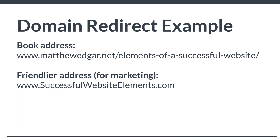I wrote a book and there's a page on my website that talks all about it. But when I do interviews about the book, I don't want to give people 'matthewedgar.net/elements-of-a-successful-website' because that's a mouthful to say and quite a lot to put on an ad. So instead we can use a friendlier address such as successfulwebsiteelements.com, which redirects to that page. When people type in successfulwebsiteelements.com, I want to know about it — I don't want those people to just be labeled as direct traffic. I want to know they came as a result of typing in this friendly URL, so I better understand if my marketing to promote my book is actually working.